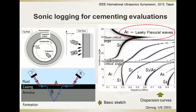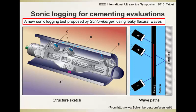Here is a new sonic logging tool recently proposed by Schlumberger Corporation in the last ten years. It uses the flexural wave, and we can see there is one transmitter and two receivers. Different from conventional logging tools, all transducers are at inclined angles. They transmit ultrasonic waves that propagate along the casing as flexural waves and are received by the receivers. This logging tool was designed for imaging the cement annulus, and in this work we investigate whether this technique can evaluate the cement bond quality of the annulus.